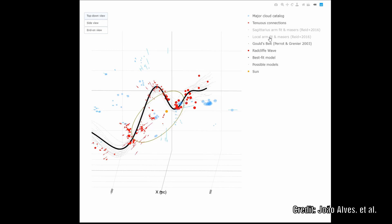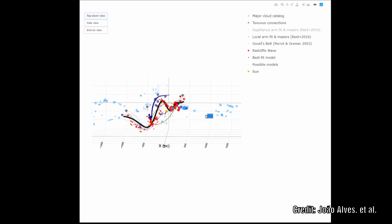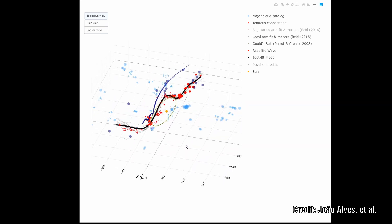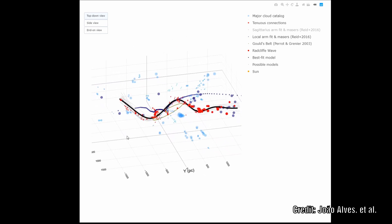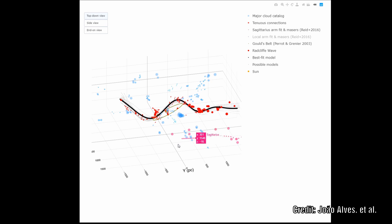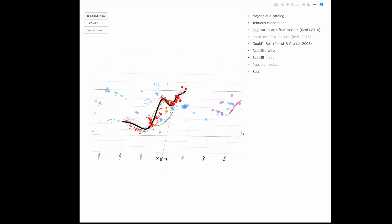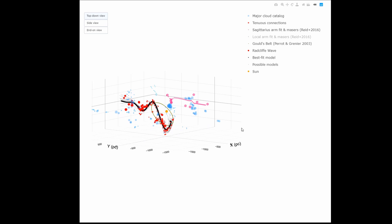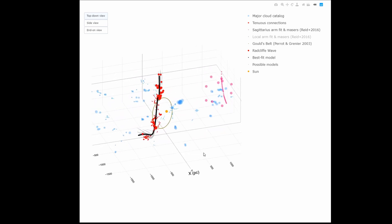Using this, they were able to reveal the structure of a giant wave of connecting clouds. They have called this the Radcliffe wave. According to their calculations, our solar system lies about 500 light-years from this wave, and it is thought that we crossed it about 13 million years ago, and we might do so again in another 13 million years.